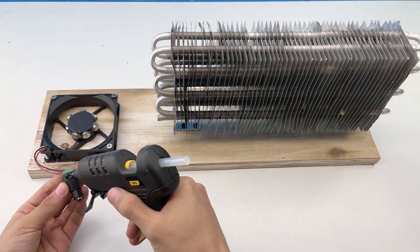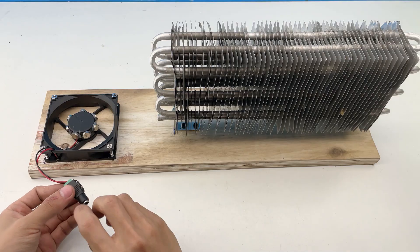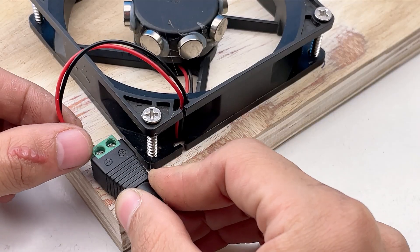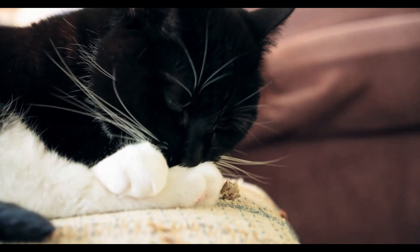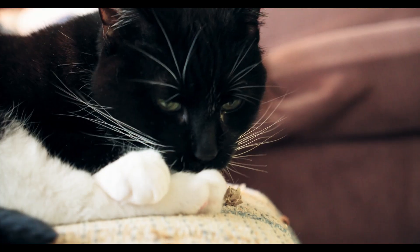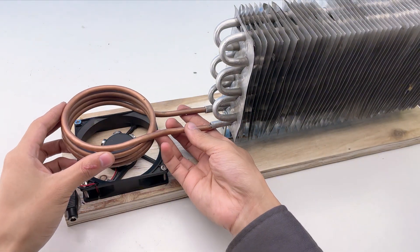I'll apply hot glue to the DC jack and secure it onto the wooden base. Now, the copper tube we just shaped will be attached here.